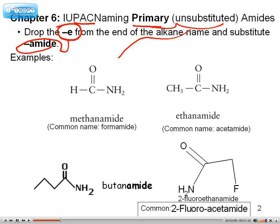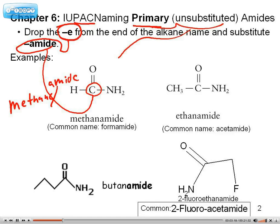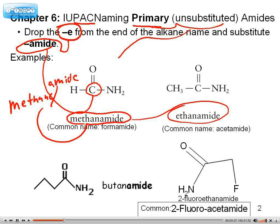So in this case, if the parent is normally methane, you drop the 'e' and replace it with 'amide.' Consequently, we have methanamide. And we have ethanamide. Know how to use the IUPAC names. Here are the original common names — those you'd have to memorize — but I would expect you to be able to predict the IUPAC name for various primary amides.